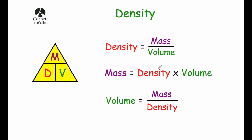So if you know the density of an object and you know the volume, if you multiply those two together you get the mass of the object. And finally, by dividing both sides of the formula by density, you get that the volume of an object is equal to the mass of the object divided by the density. These three relationships can be represented in a triangle.